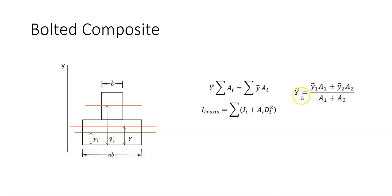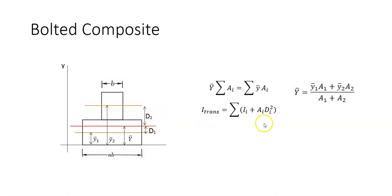Once Y-bar is calculated, you can plug into this equation. You need D1 and D2, which are the distances between the neutral axis of the composite and section 1, and between the neutral axis of the composite and neutral axis of section 2. With these two parameters, you can plug into the equation to obtain the transformed moment of inertia, then plug that into the deflection equation to get the deflection.